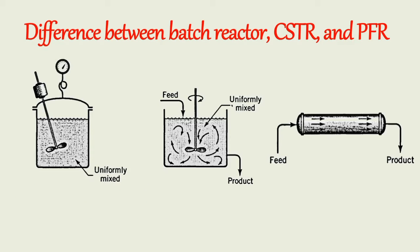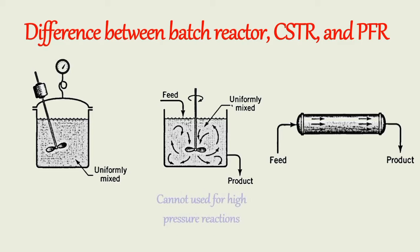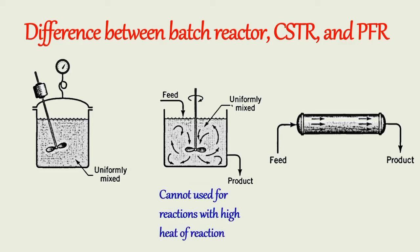CSTR can be operated under isothermal conditions even when the heat of reaction is high. In a plug flow reactor, for exothermic reactions it is difficult to control the temperature and hot spots can occur. CSTR cannot be used for high pressure reactions because it requires a large wall thickness and complex sealing arrangements for the agitator, which increases initial and maintenance cost. PFR can be used for high pressure reactions due to cost considerations, as it uses small diameter tubes. CSTR is not suited for reactions with a very high heat of reaction due to low heat transfer area available per unit volume and low heat transfer coefficients. PFR can also be used for reactions with a high heat of reaction, as the rate of heat transfer per unit volume of the reaction mixture is high.